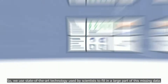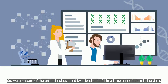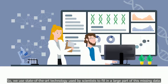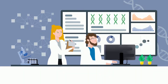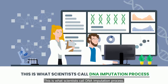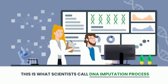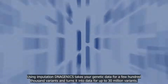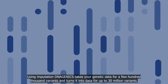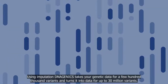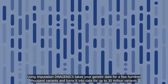So we use state-of-the-art technology used by scientists to fill in a large part of this missing data. This is what scientists call the DNA imputation process. Using imputation, DNAgenics takes your genetic data for a few hundred thousand variants and runs it into data for up to 30 million variants.